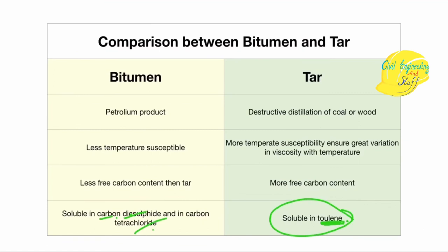This concludes the discussion on adhesive materials used for construction of bituminous roads. Conventionally, bitumen or modified bitumen is used as the adhesive agent for construction and maintenance. In special conditions, cutback bitumen and emulsion are used, while tar is confined mainly to repairment work. Bitumen is used for flexible roads, while cement is used for construction of concrete roads, also called rigid pavements.